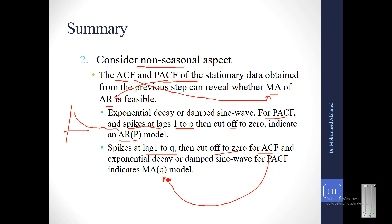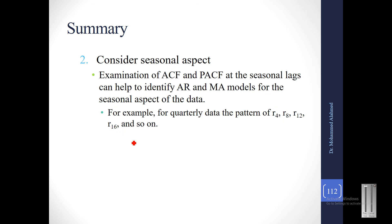Similarly, spikes at lags 1 to Q and then cut off to zero for the ACF indicates the MA component and the parameter Q. If you have significant lags in the ACF up to lag Q and then it cuts to zero, you may say it is an MA(Q) model. Similarly, if the PACF spikes from lag 1 to P and then cuts off to zero, it indicates an AR(P) model.